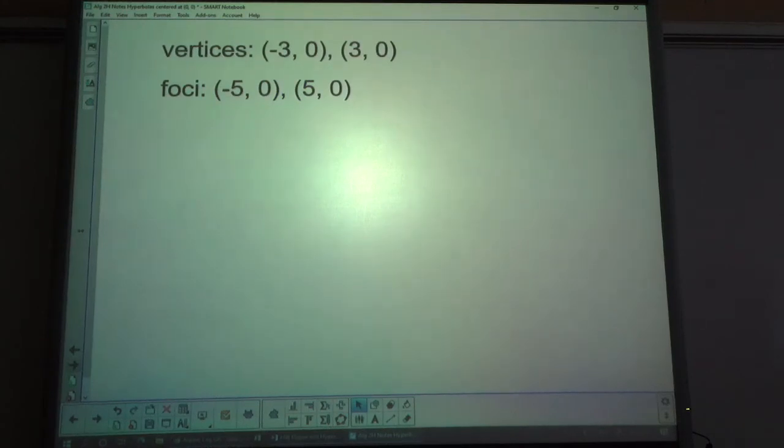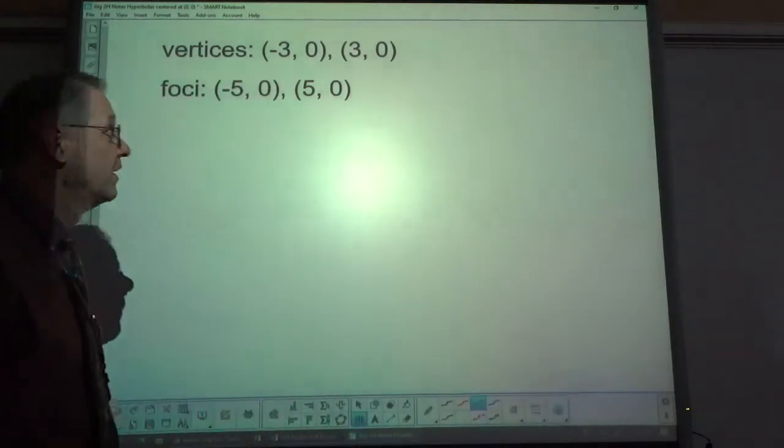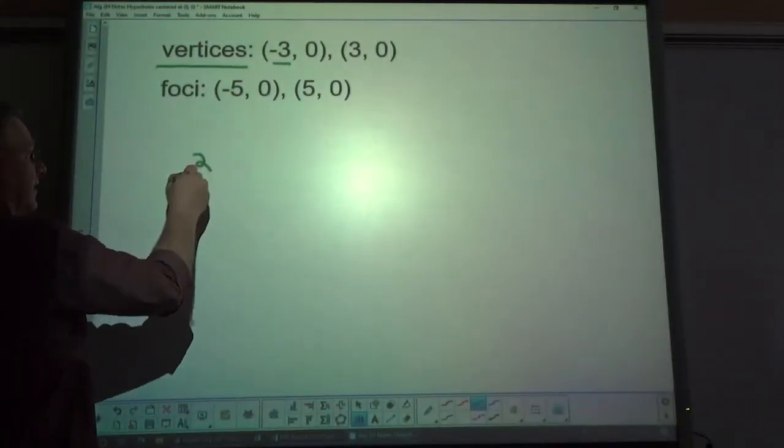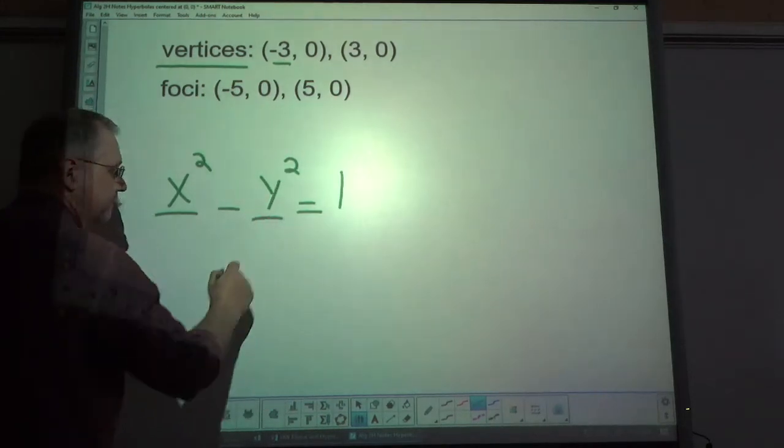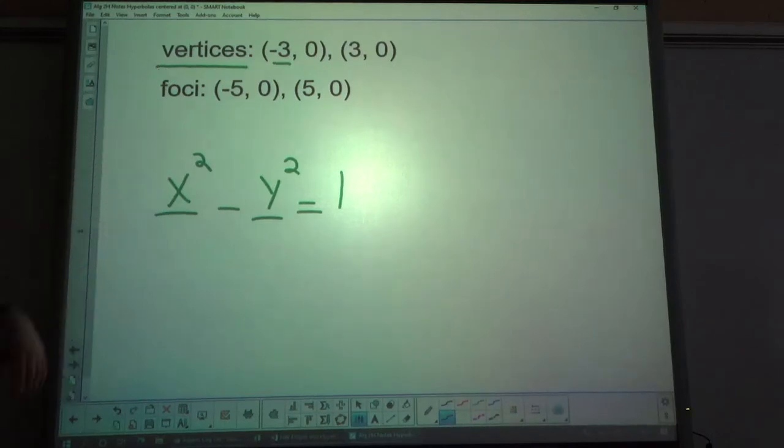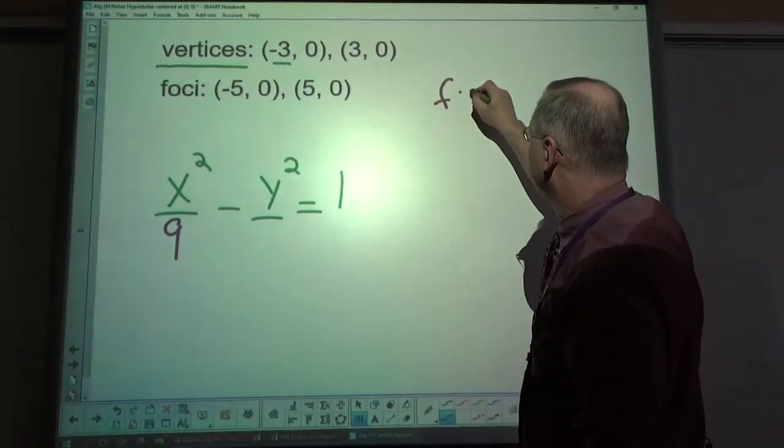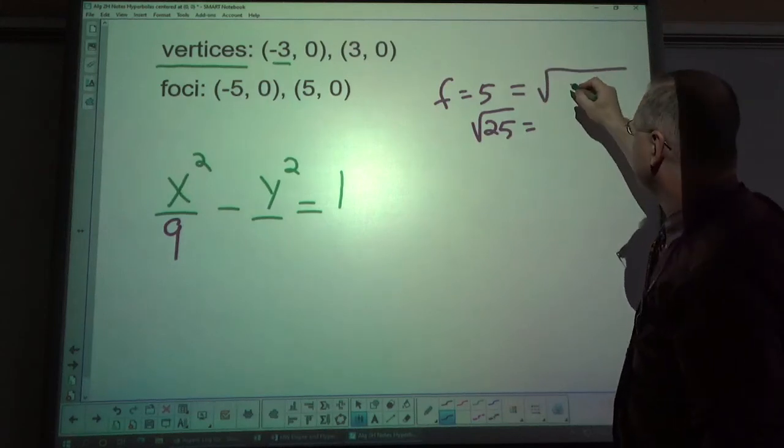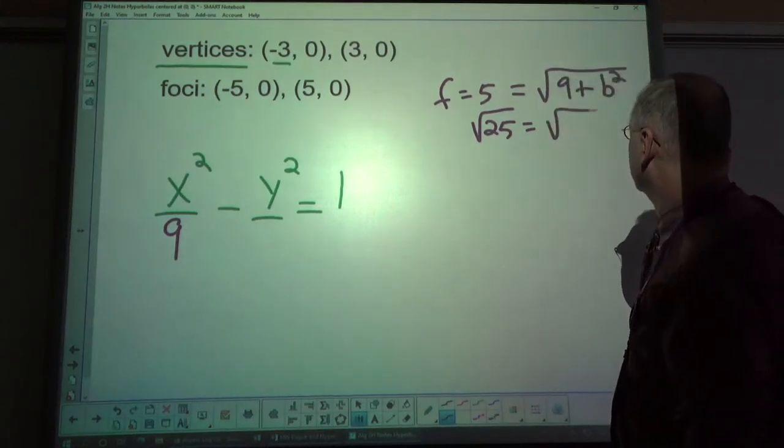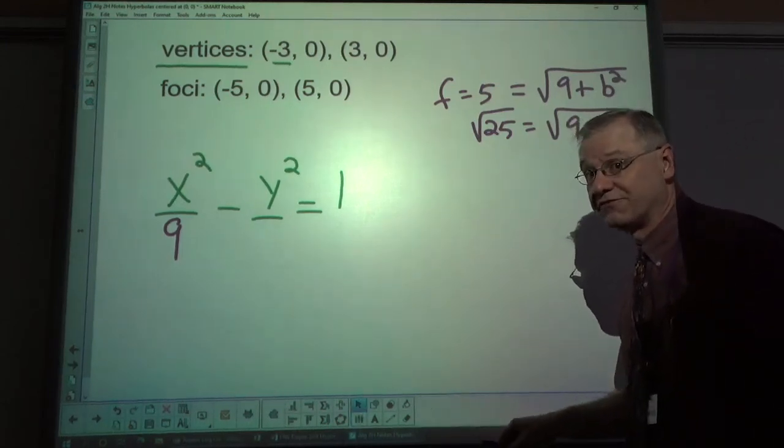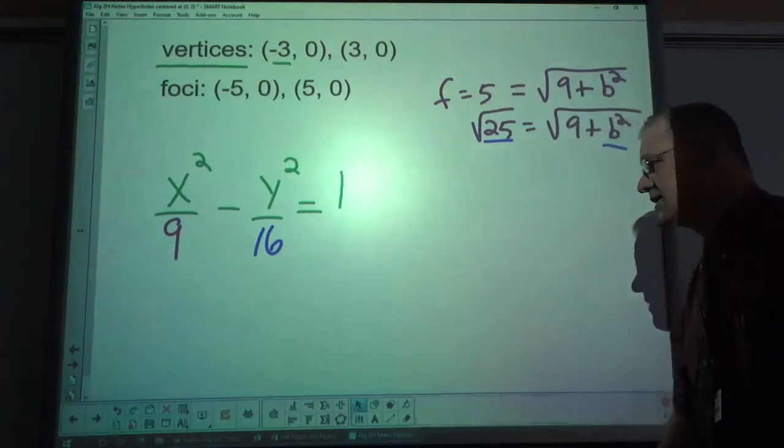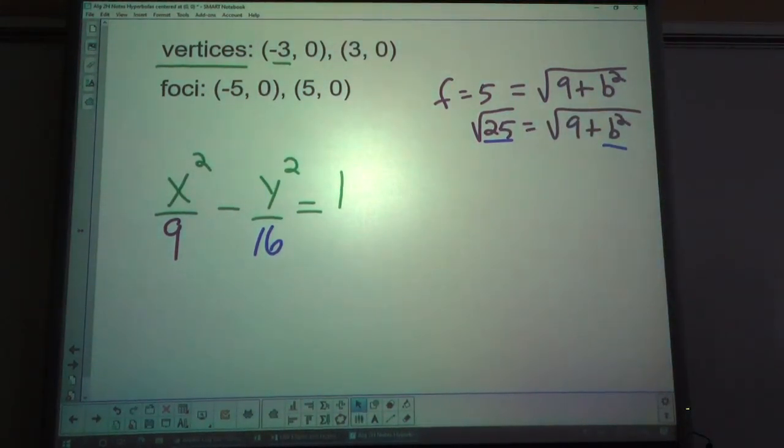And what happens when I'm given vertices and foci, and I have to find the equation? Well, I know that because the vertices are in the x-coordinate spot, that the x squared has to be listed first in the subtraction. I also know that because it's 3, 3 squared is 9, so it's my a squared. I need to know what b squared is. Well, if f is 5 or square root of 25, that's going to equal the square root of a squared plus b squared. We're just trying to find b squared. What would I have to add to 9 to get 25? I'd need 16. And so, that's what b squared has to be. And there's your equation in standard form.